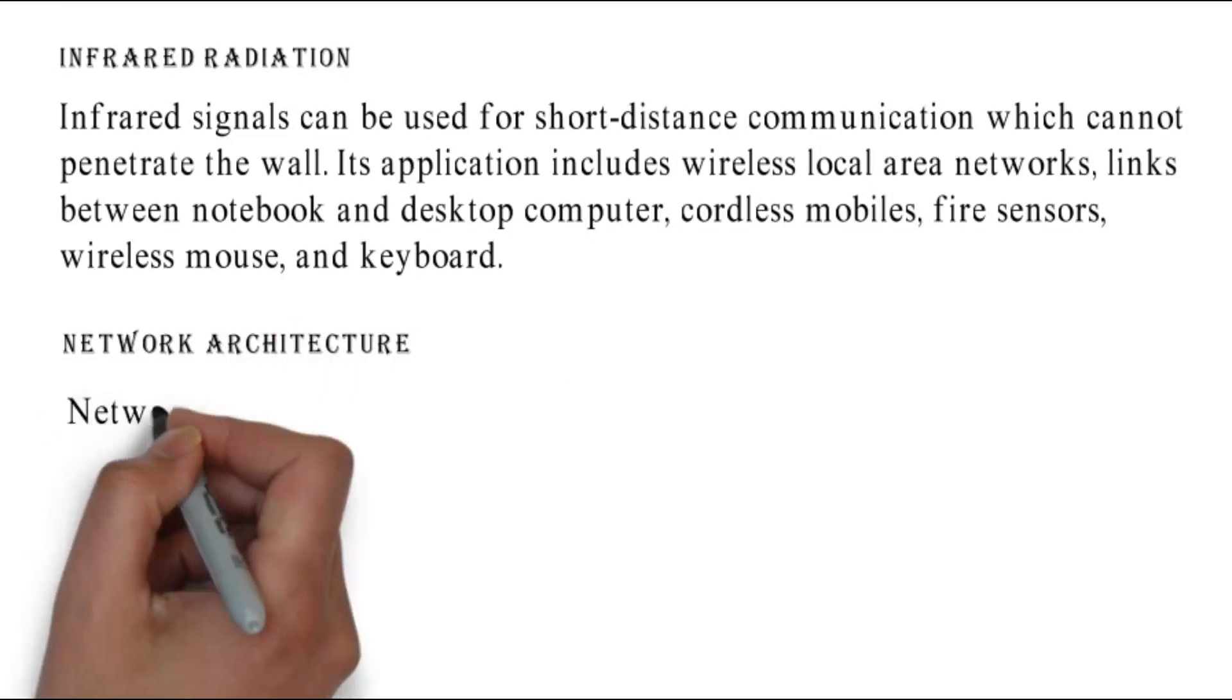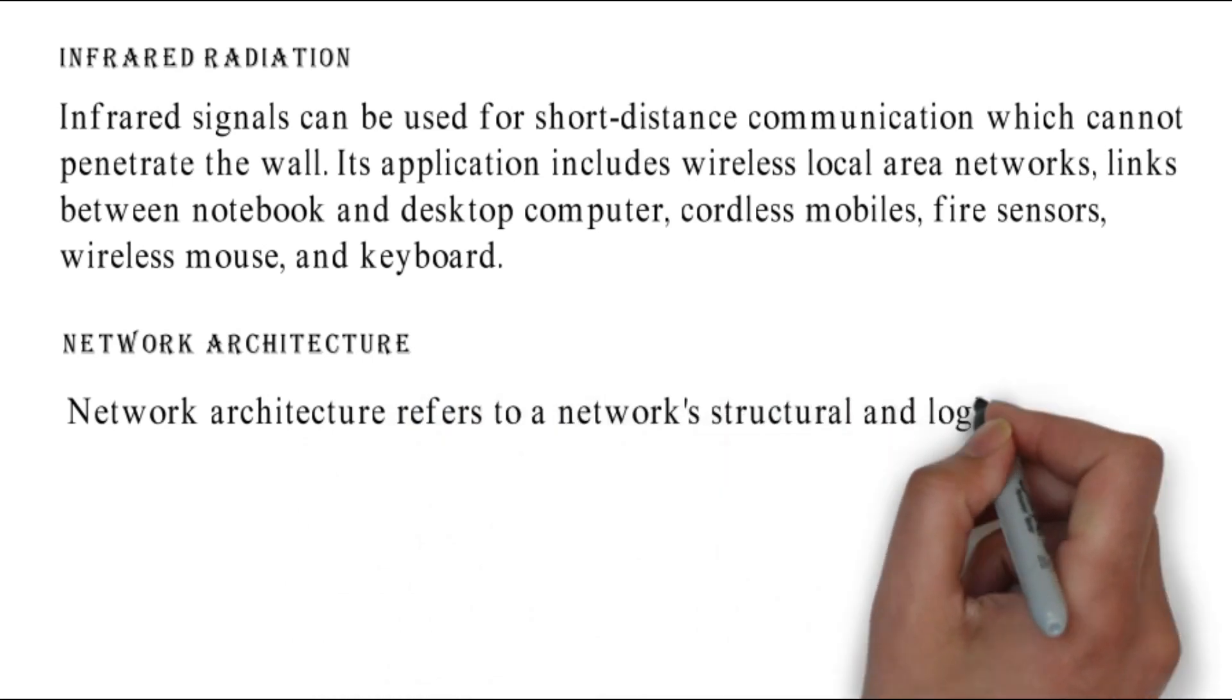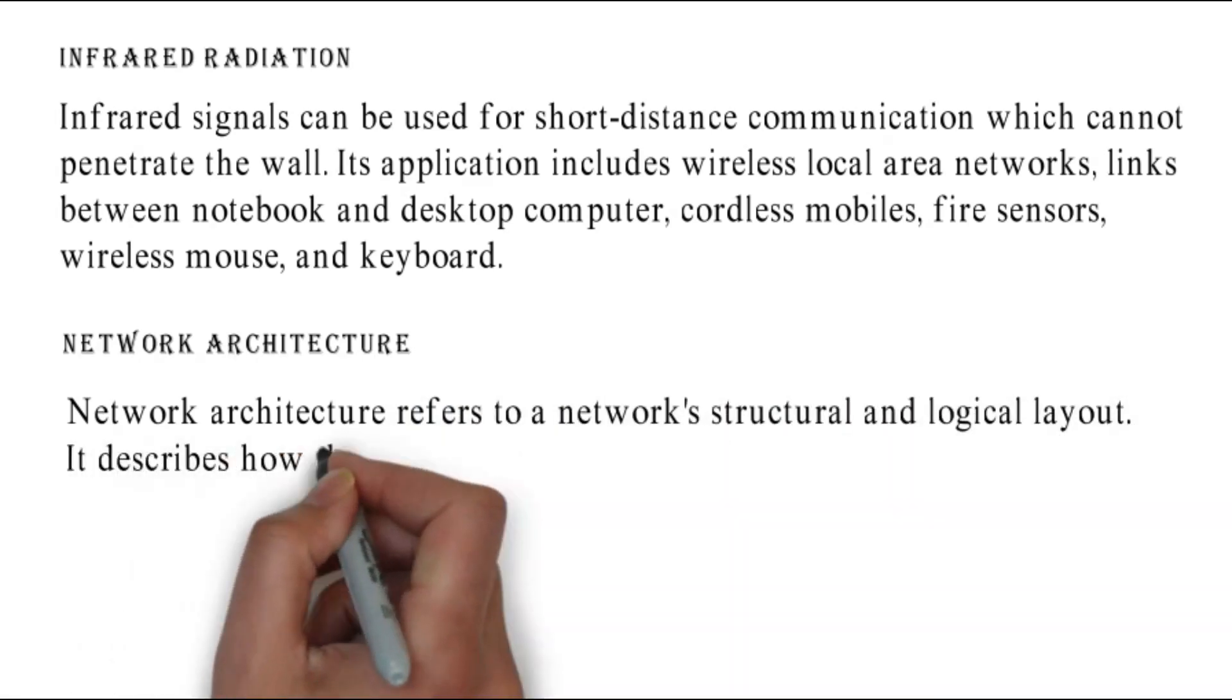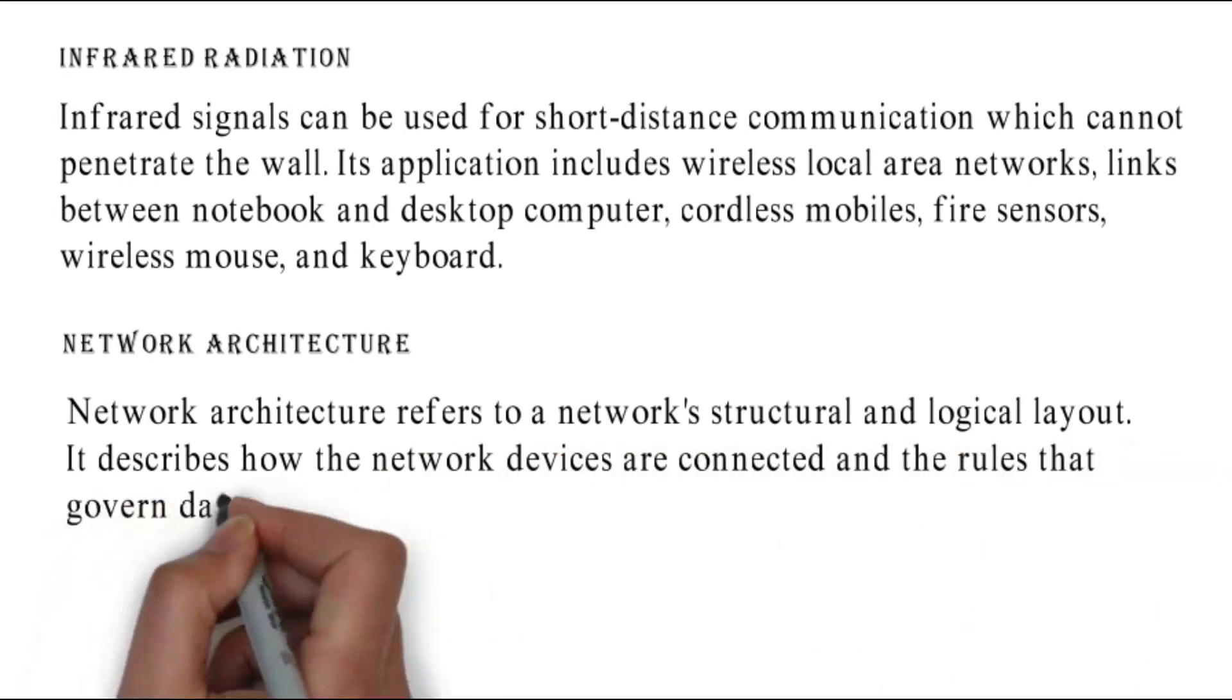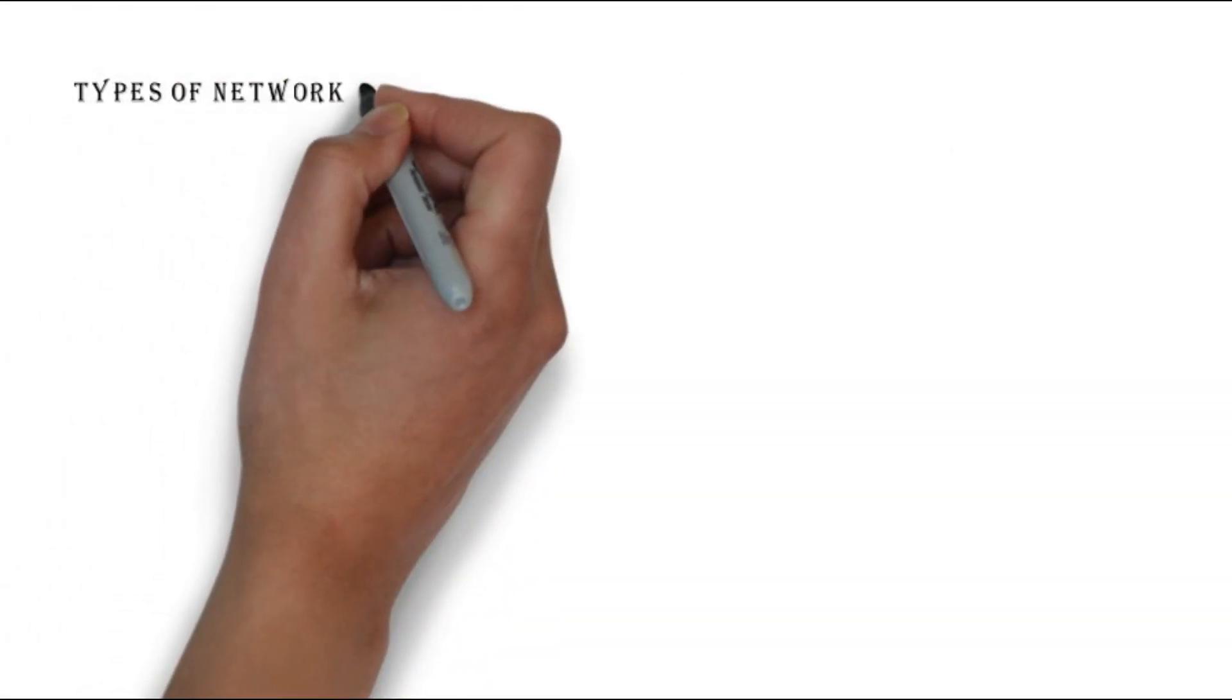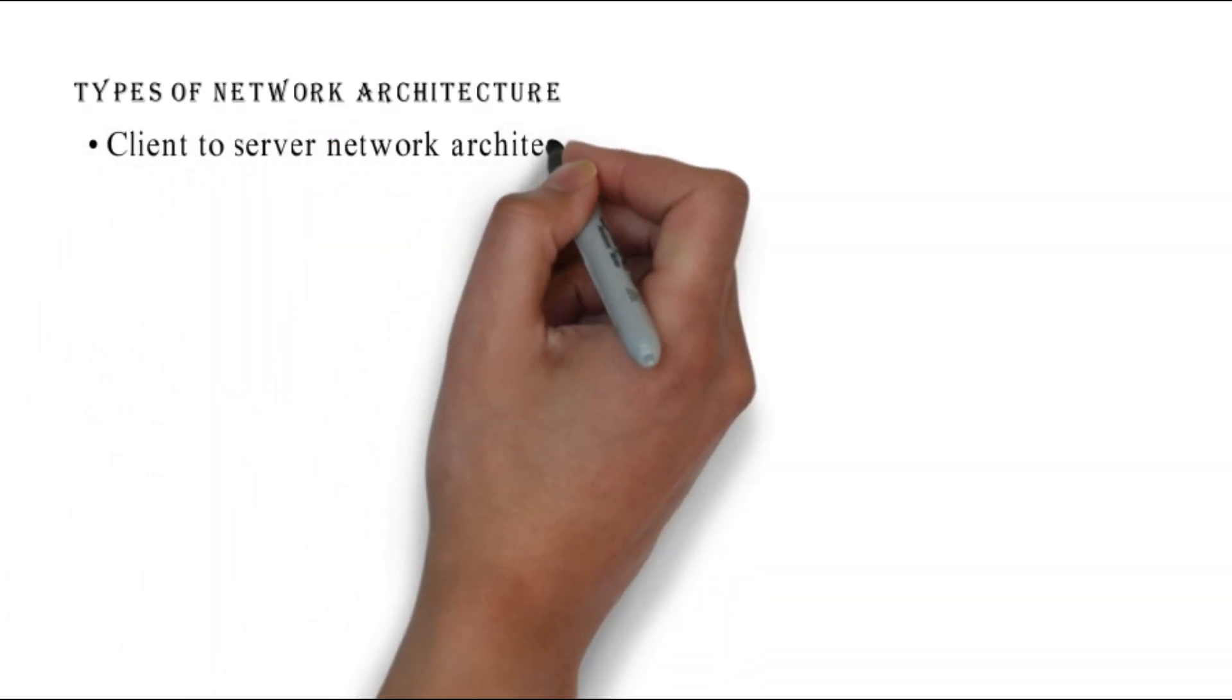Network architecture. Network architecture refers to a network structural and logical layout. It describes how the network devices are connected and the rules that govern data transfer between them. Types of network architecture: client to server network architecture, peer-to-peer network architecture.